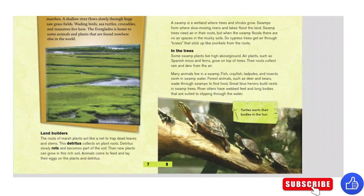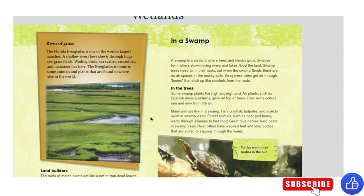Land Builders. The roots of marsh plants act like a net to trap dead leaves and stems. This detritus collects on plant roots. Detritus slowly rots and becomes part of the soil. New plants can grow in this rich soil. Animals come to feed and lay their eggs on the plants and the detritus.